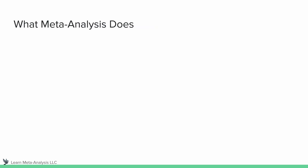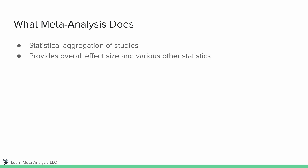So first question: what does meta-analysis actually do? Essentially, what I want you to think about is meta-analysis as a statistical aggregation of studies. We're going to take effect sizes from multiple studies around the same thing and combine them together to see what the overall effects are. What we're doing is providing an overall effect size and various other statistics — things like heterogeneity and outliers — each of which has their own video. But for right now, we're going to focus on this overall effect size.